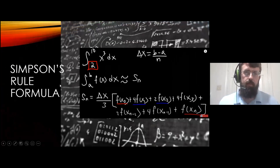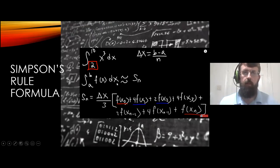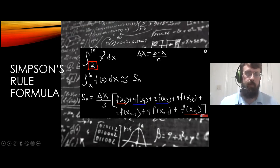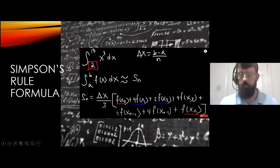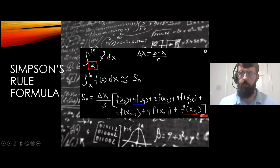The Simpson's rule formula is a definite integral evaluated from A to B, with f of x as the function dx, approximately equal to S of n. S of n is equal to delta x over 3, multiplied by f(x0) plus 4·f(x1) plus 2·f(x2), and it goes back and forth — alternating 4, 2, 4, 2 — until you get to your final interval's value, which ends with 1.